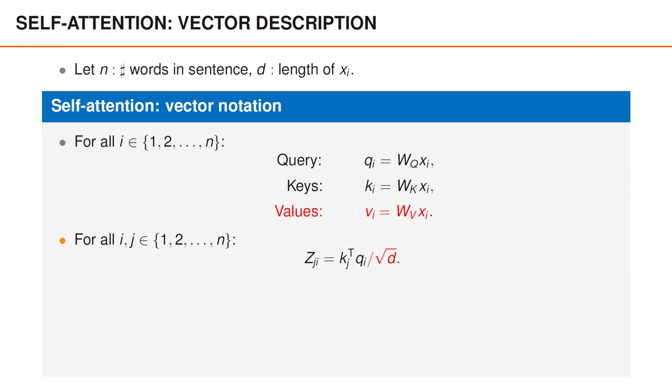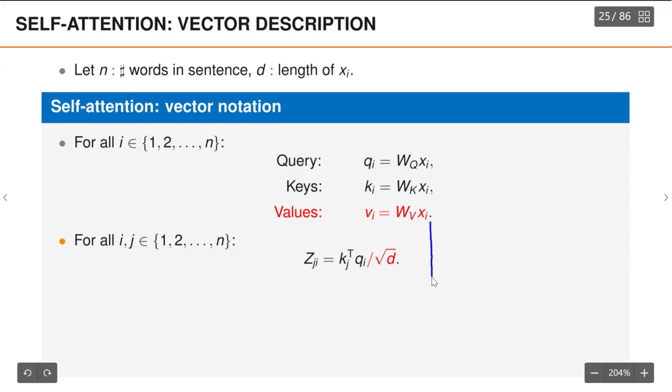One heuristic argument for including the scaling is that the z values vary less with dimension. For instance if you look at the 2 norm of a vector of 1s of length d normalized with the square root of d you can see that it takes the value 1 regardless of the length of the vector.